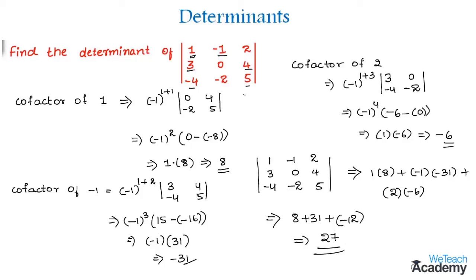To summarize, the minor is found by deleting the corresponding row and column, and the cofactor is obtained by multiplying (-1)^(i+j) into the minor. This is how we find the determinant of a 3 by 3 matrix. Hope you understood the concept. For more videos, visit our website Verich Academy.